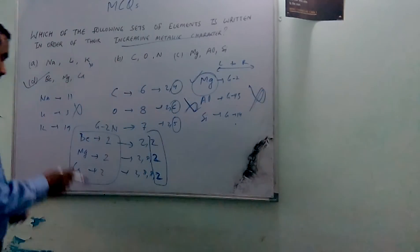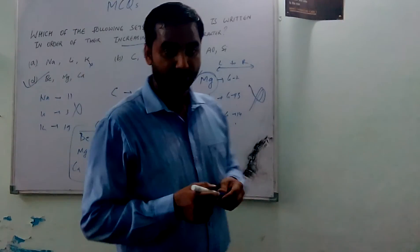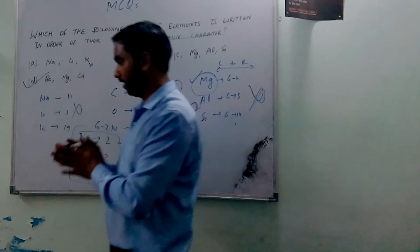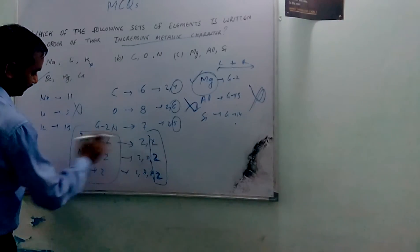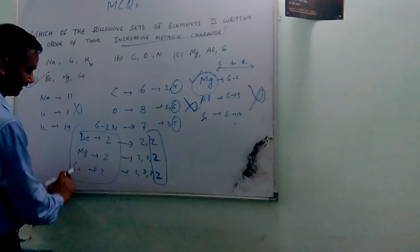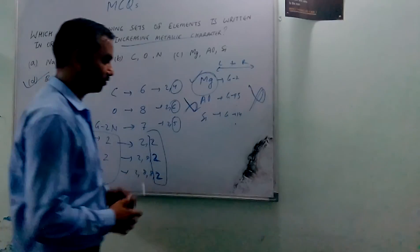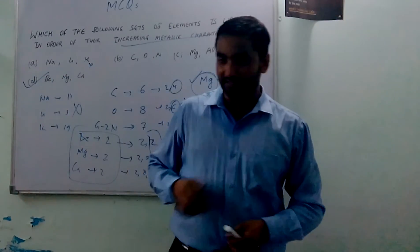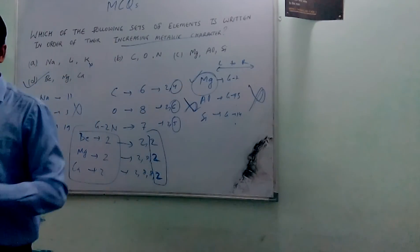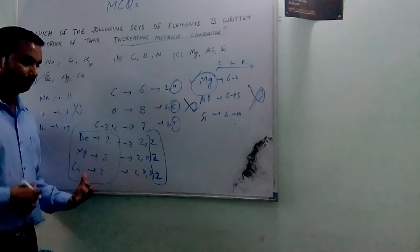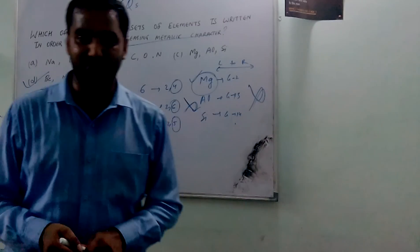The electronic configurations are 2,2 for beryllium; 2,8,2 for magnesium; and 2,8,8,2 for calcium. These configurations show that beryllium has the minimum metallic character, magnesium is greater than beryllium but less than calcium, and calcium has the highest metallic character in the series. So the answer is option 4 — beryllium, magnesium, calcium. Thank you for watching this video, kindly subscribe.